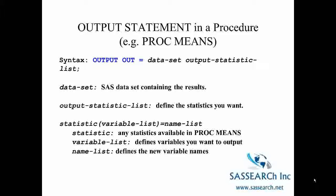Basically, the syntax for creating a SAS data set from a procedure begins with the keyword output, followed by the word out equals, and we give the name of the SAS data set that we're interested in creating, followed by a list of the statistics that we want put on that new data set. The data set name is where we want to put our results, and then we can define whatever statistics that procedure produces to put on that new SAS data set.